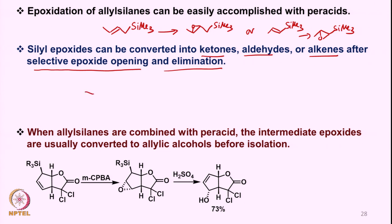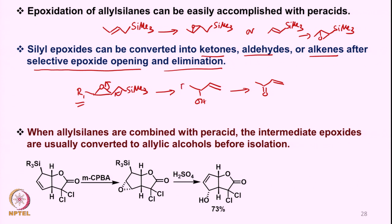Say you have an epoxide of this kind. This can lead to the formation of an OH and a double bond. If this is how it opens, you get the allyl alcohol, and this can be converted to a ketone or aldehyde depending on the substituent — if it is R1 then we get a ketone, if it is a proton then we get an aldehyde. So there are different ways by which the reaction can be triggered or directed.